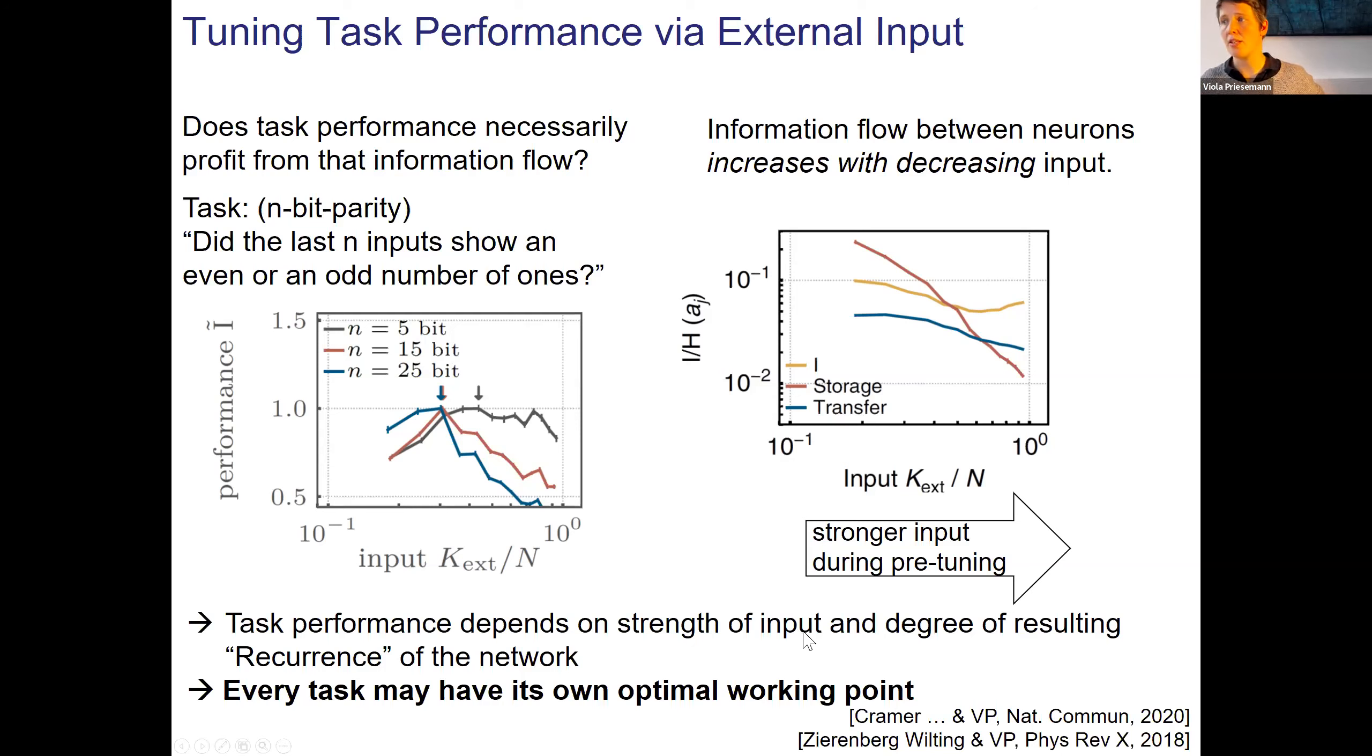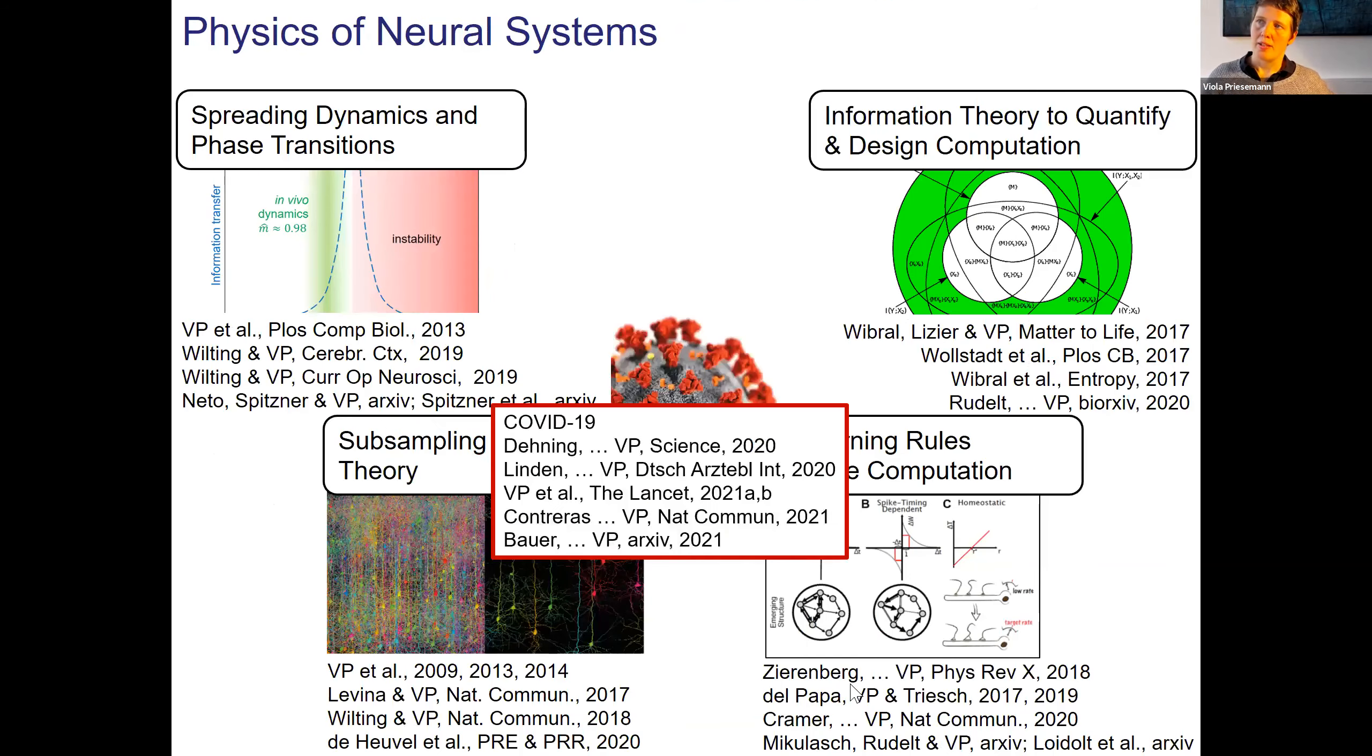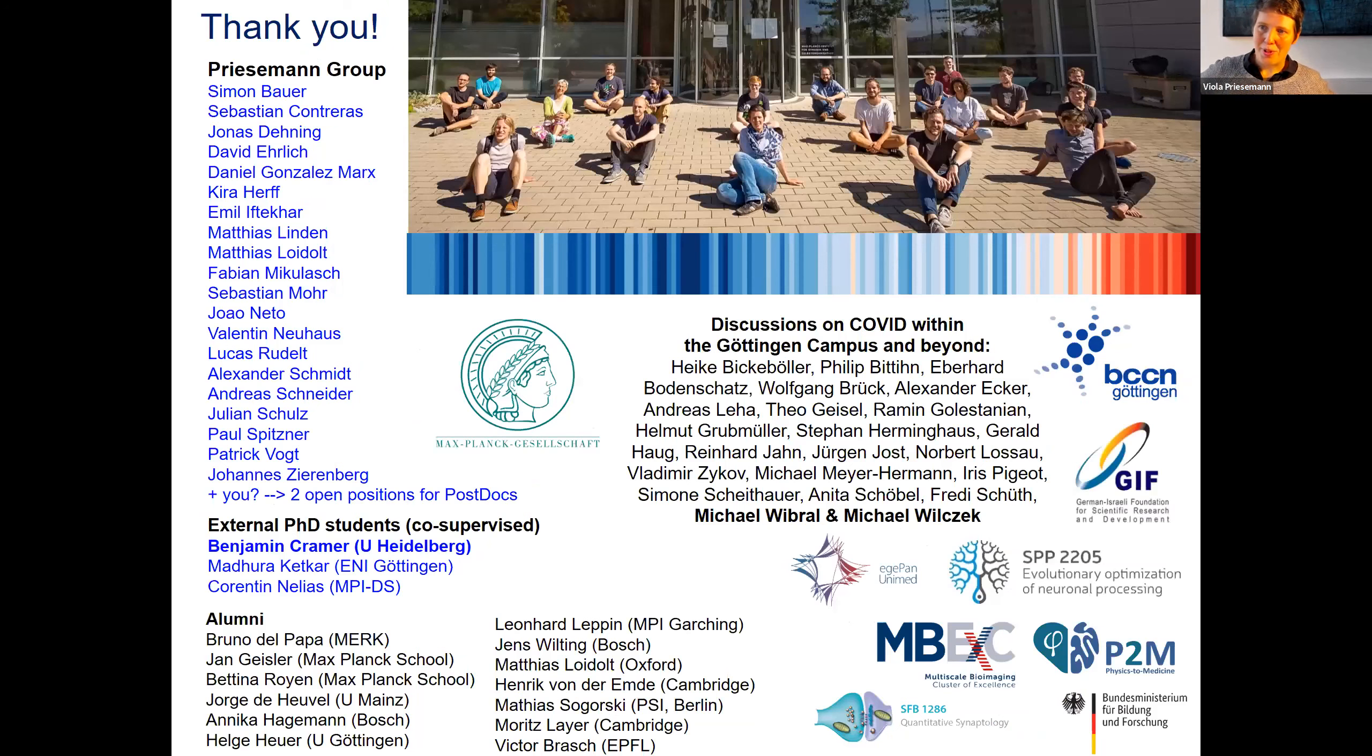But then the question is, can we use that for computation? Critical dynamics often has been associated with these maximal processing properties. Maximum does not necessarily mean it's optimal, and that's exactly what we set out to test. We wanted to know whether now in a task we have also optimal performance on one or the other side. From this plot, you would expect that optimal performance is if we have weak input and the network goes more in direction of this bursty state.